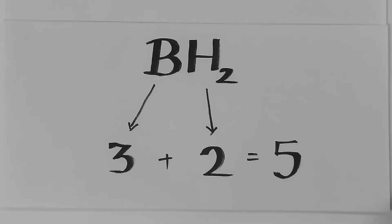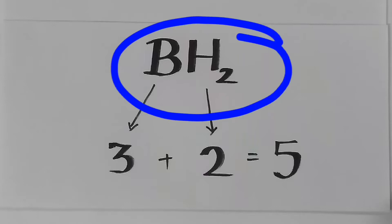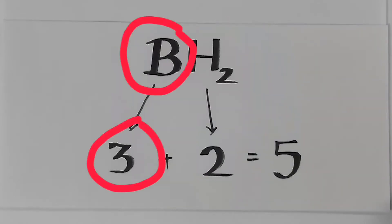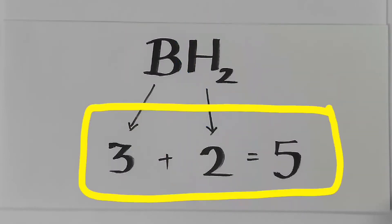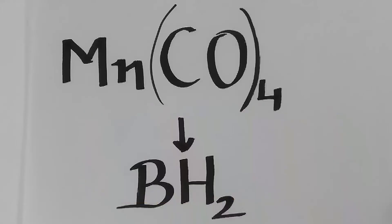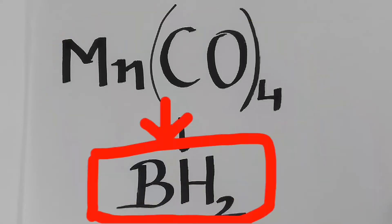After subtracting 10 from 15 we get 5. We can replace it with a BH₂ molecule since boron has 3 valence electrons and 2 hydrogen has 2 electrons which sums up to 5. So, we can replace Mn(CO)₄ with a BH₂ molecule since they are isolobal analogues.